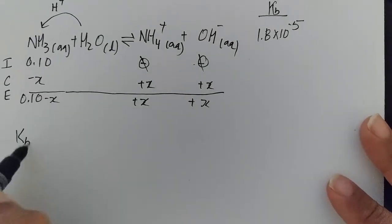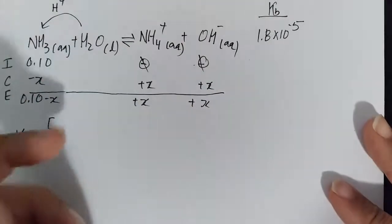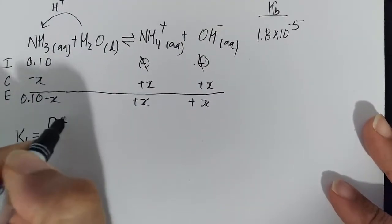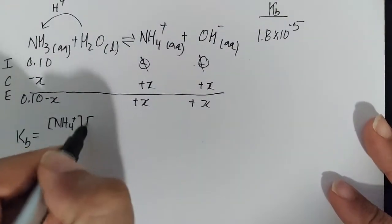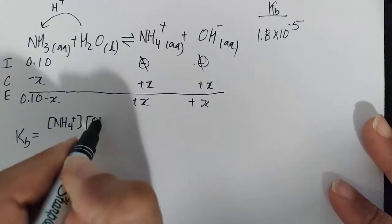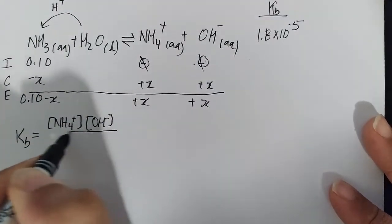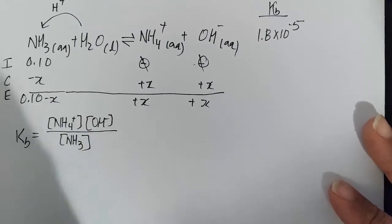Kb is going to equal products over reactants. That's going to be the ammonium ion, which is our conjugate acid to this base, times the OH- which is the conjugate base to this acid, all divided by NH3.